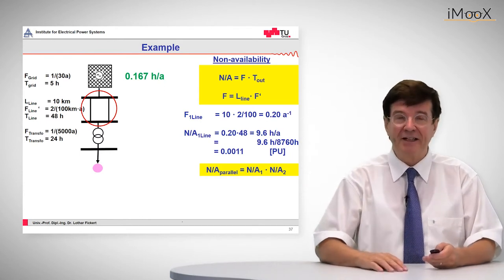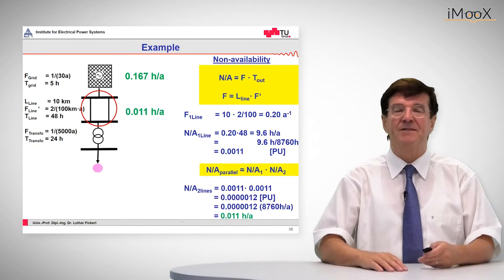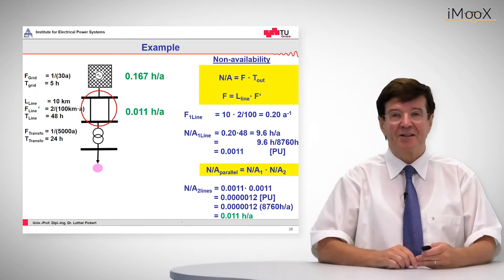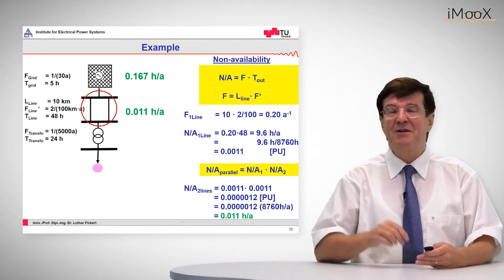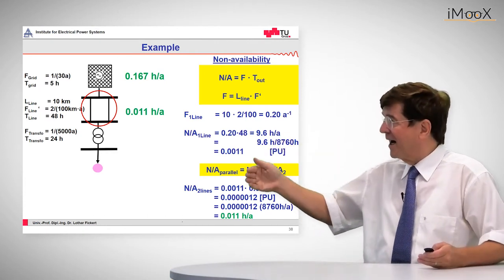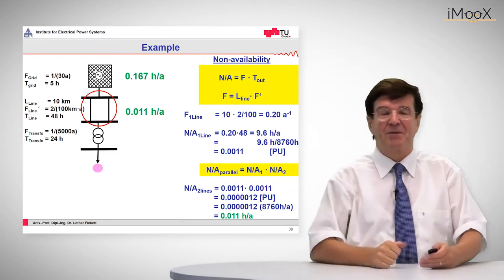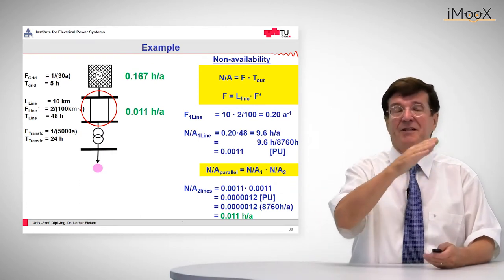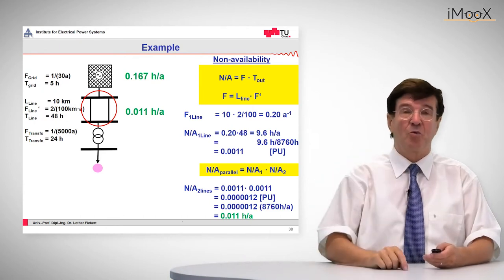The per unit quantities can be reversed into hours per year by multiplying with the factor 8,760 hours divided by 1 year.